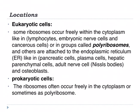What is the location of ribosomes? In eukaryotic cells, some ribosomes occur freely within the cytoplasm, such as in lymphocytes, embryonic nerve cells, and cancer cells. A group of ribosomes can be called polyribosomes. Other cells have ribosomes attached to the endoplasmic reticulum, like plasma cells, hepatic parenchymal cells, and adult cells — forming the Nissl bodies. In prokaryotic cells, ribosomes often occur freely in the cytoplasm or sometimes as polyribosomes.